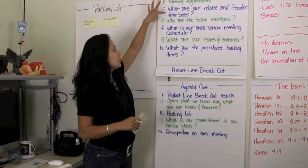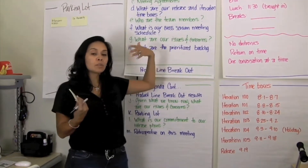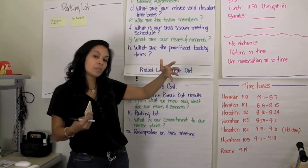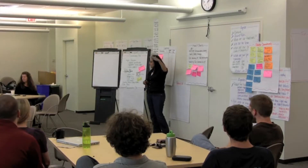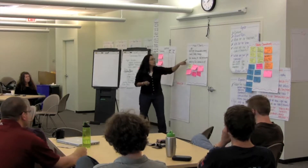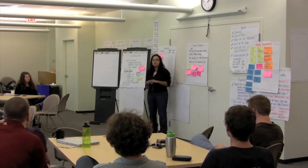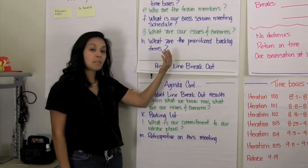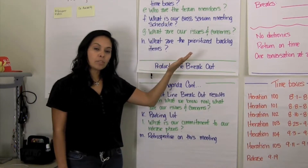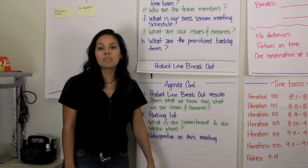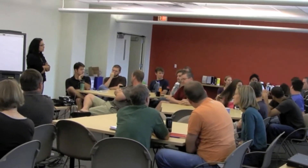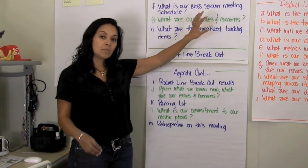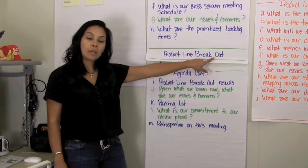After discussing these items, and given what we know right now, I ask the group if there are any other issues and concerns. If there happen to be issues and concerns prior to reviewing the backlogs, we put all those items on our parking lot. Then we ask the product owners to come up and present their backlogs — going through each of their stories and giving a detailed description, while encouraging the team to ask questions.